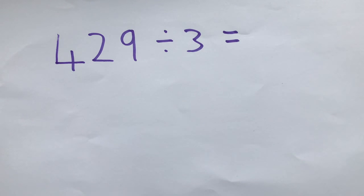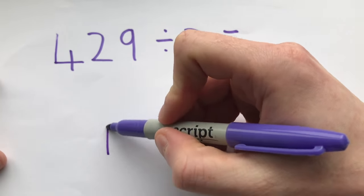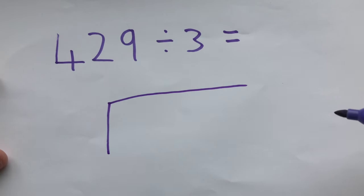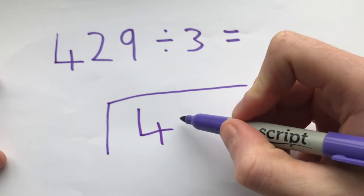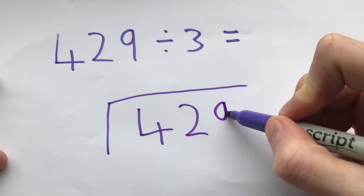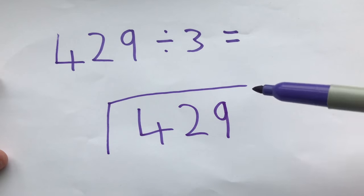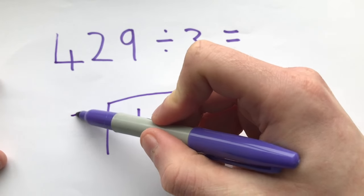In this video I'm going to show you how to use the bus stop method for division. The first thing we need to do is draw our bus stop, and the number that we're dividing goes inside the bus stop. The number that we're dividing by goes outside the bus stop.